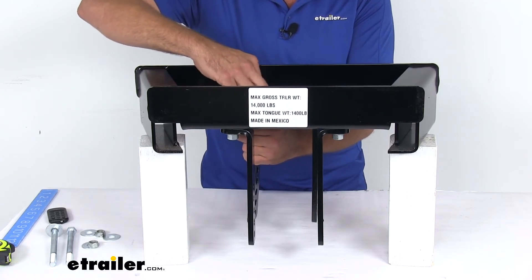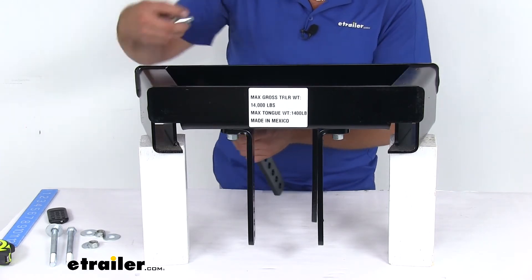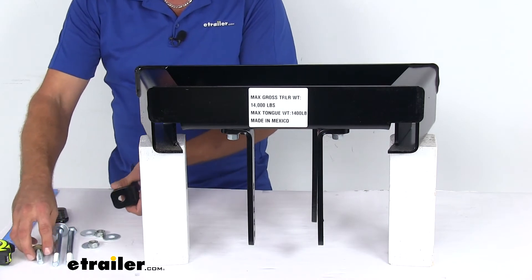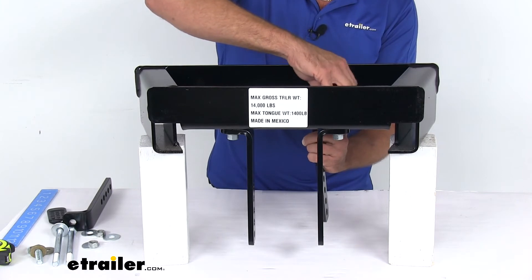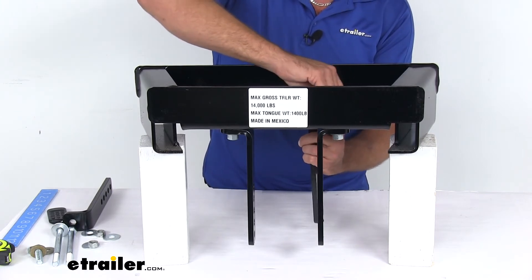I'm going to pull these brackets off right now. Of course, there's going to be four brackets: two in the front, two in the back. We're going to take a look at some of the other measurements on it.